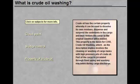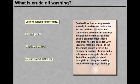Crude oil has the property of being able to dissolve its own residues, disperse and suspend the sediments in the cargo, and thus restore the cargo to its original condition when loaded. This property is the basis of crude oil washing, which involves the cleaning or washing of cargo tanks with high-pressure jets of crude oil. Part of the cargo is circulated through fixed piping and washing machines during cargo discharge.